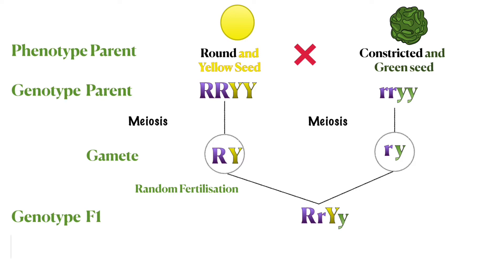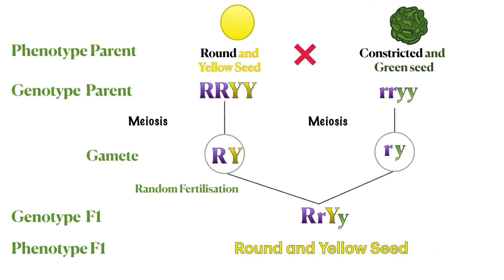These gametes will fertilize and produce heterozygous first filial offspring that are all RrYy. All of the first filial offspring are round and yellow because they are called dihybrids — 'di' means two characteristics, and 'hybrid' means heterozygous. The F1 phenotype is round and yellow because they have at least one dominant allele R and one dominant allele Y.